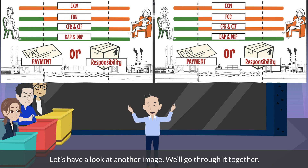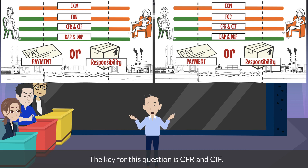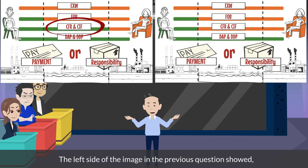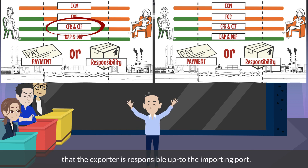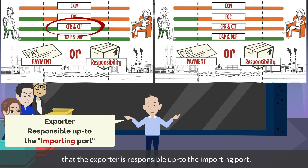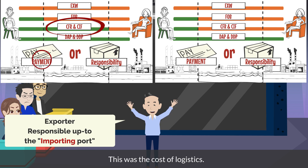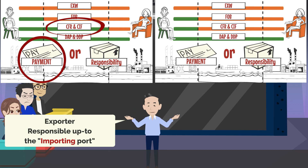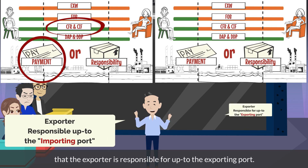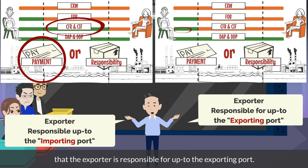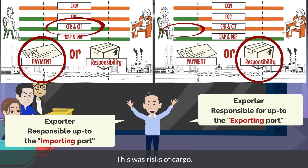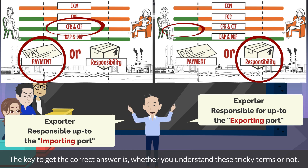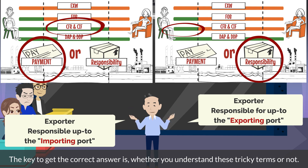Let's have a look at another image. We'll go through it together. The key for this question is CFR and CIF. The left side of the image in the previous question showed that the exporter is responsible up to the importing port — this was the cost of logistics. The right side of the image showed that the exporter is responsible up to the exporting port — this was the risk of cargo. The key to get the correct answer is whether you understand these tricky terms or not.